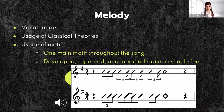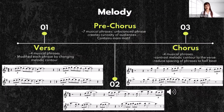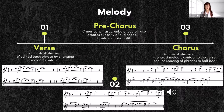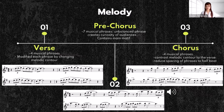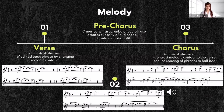Looking closer at each section: the verse includes four musical phrases — the melodic contour goes up, down, and up in the first phrase, while the second is up and down, modified slightly. The pre-chorus includes seven musical phrases — an unbalanced phrase used to create curiosity. The chorus has four musical phrases, but the contour of melody contrasts with the verse and reduces the spacing of phrases into half beats. Each phrase starts at the second beat to provide an unstable feeling, and the unbalanced phrases in the pre-chorus create tension resolved in the chorus.